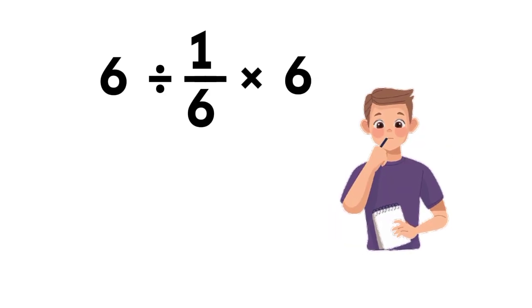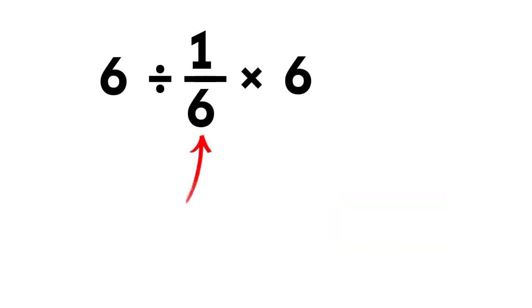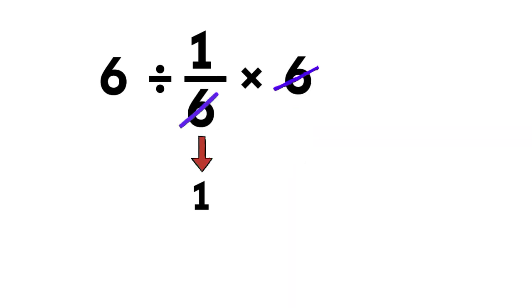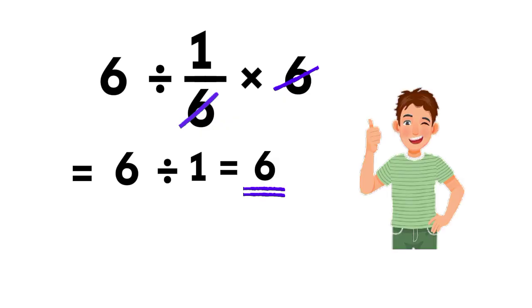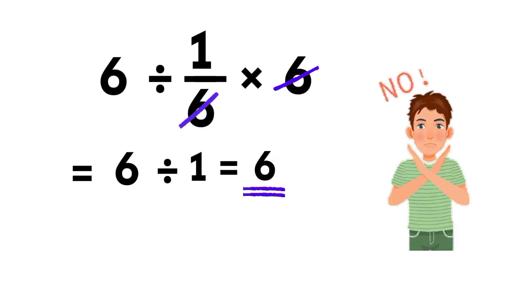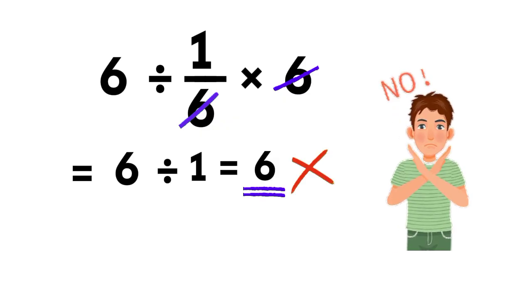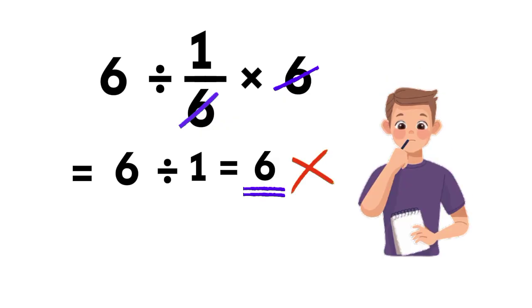They start by multiplying 1 over 6 with 6, cancel the 6's, say it becomes 1, and then 6 divided by 1 is just 6. Sounds neat, but oh no, that is not correct.